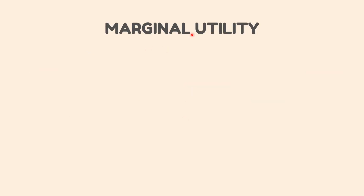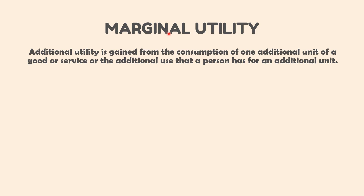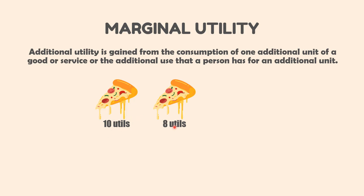Marginal Utility. Marginal utility is defined as the additional utility gained from the consumption of one additional unit of a good or service, or the additional use that a person has for an additional unit. Using the same example, if the economic utility of the first slice of pizza is 10 utils and the utility of the second slice is 8 utils, the marginal utility of eating the second slice is 8 utils. If the utility of a third slice is 2 utils, the marginal utility of eating that third slice is 2 utils.